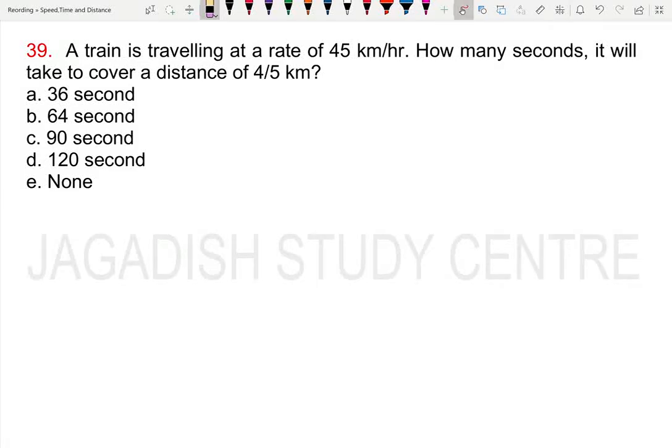A train is traveling at a rate of 45 km per hour. How many seconds will it take to cover a distance of 4 by 5 kilometers? We need to find the time in seconds.